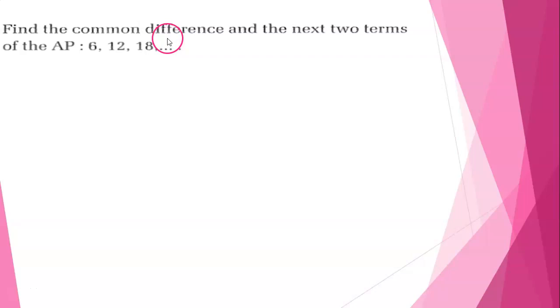Today's question is: find the common difference and the next two terms of the AP. So the given AP is 6, 12, 18, and so on.